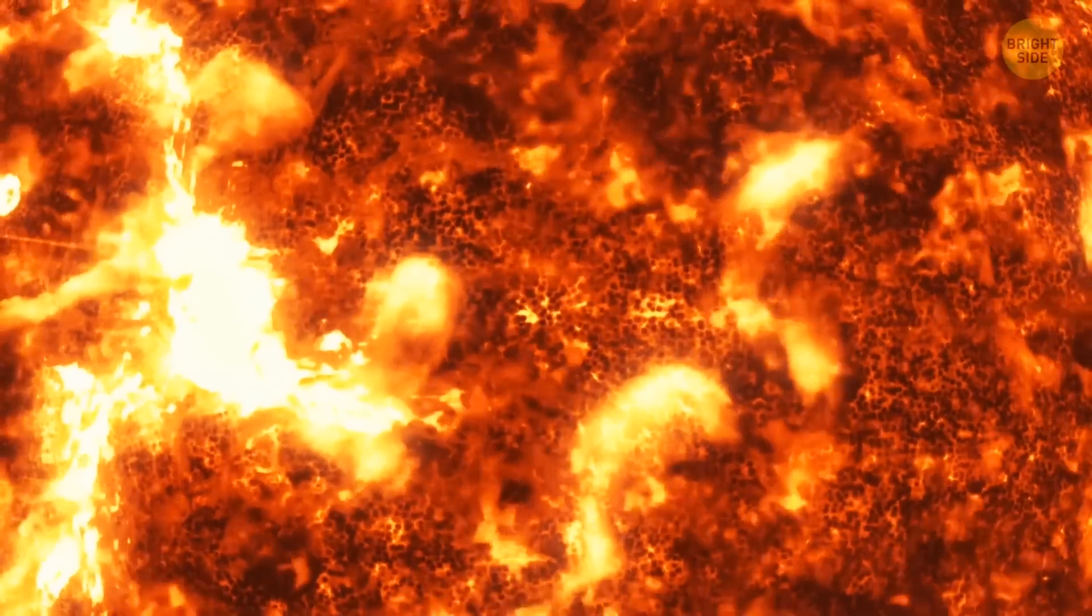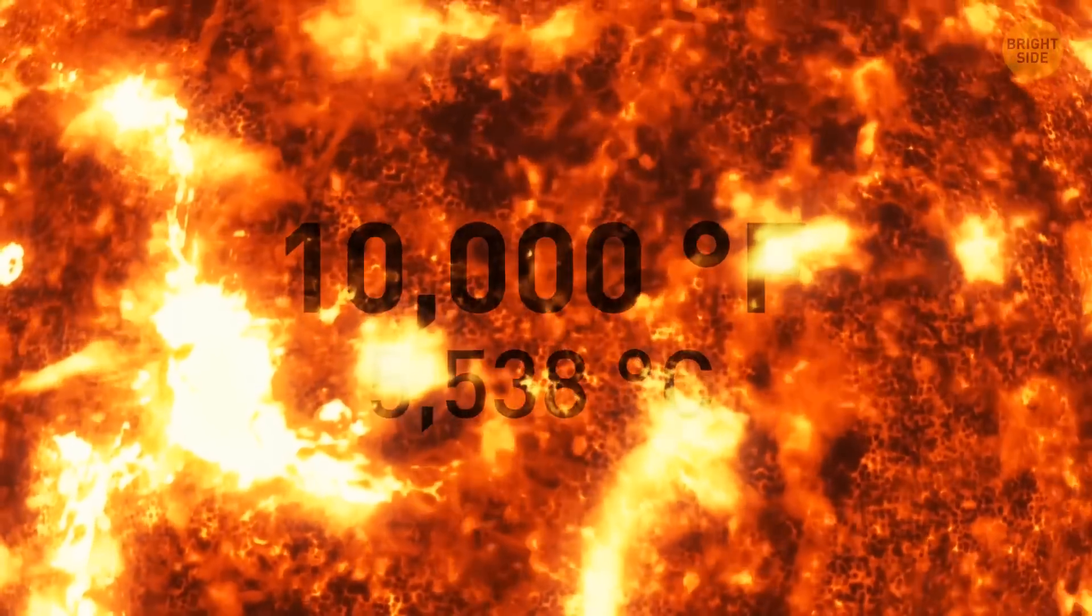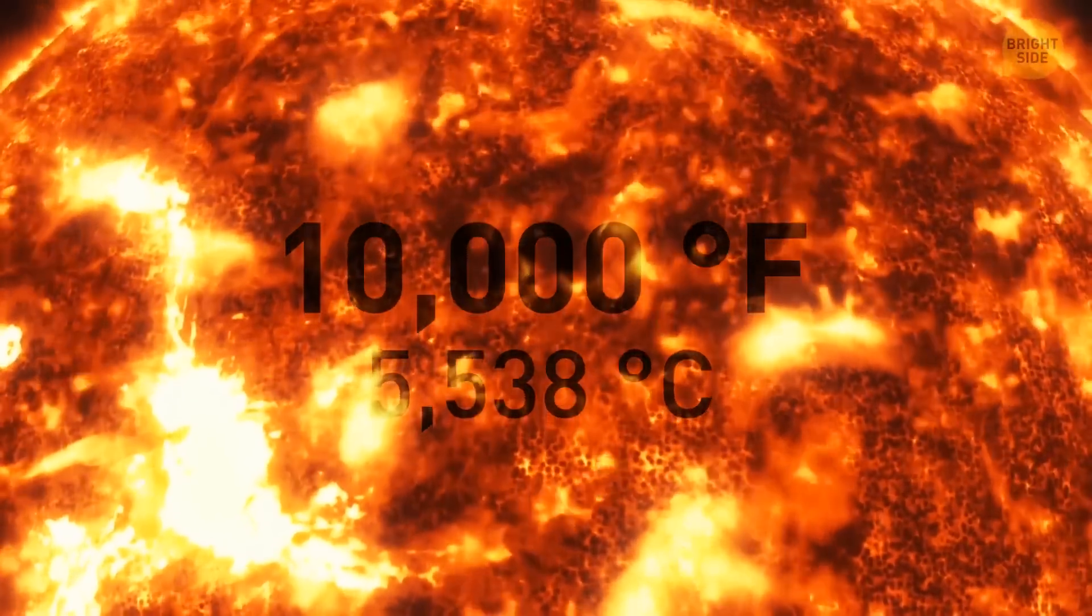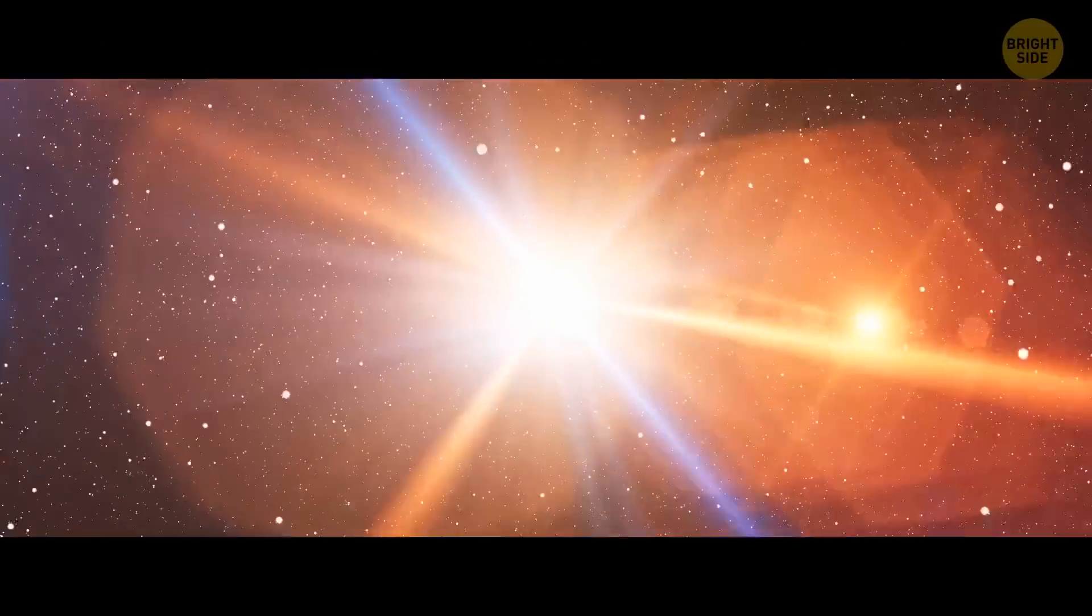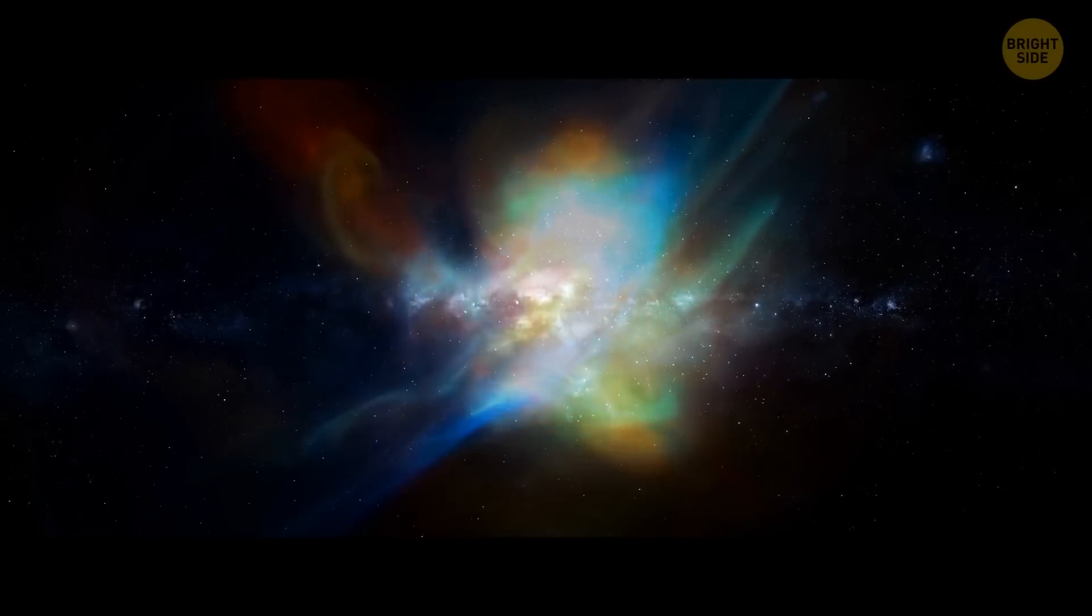Our Sun, by comparison, has a temperature of almost 10,000 degrees Fahrenheit. So, it means that the newly formed red dwarf will be far dimmer than the Sun.